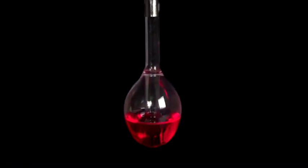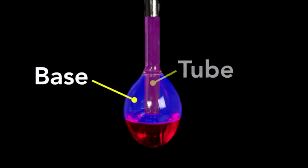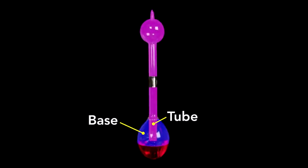It's hard to see, but a tube extends into the base, nearly reaching the bottom. This separates the vapor in the base and the vapor in the tube and, of course, the head.